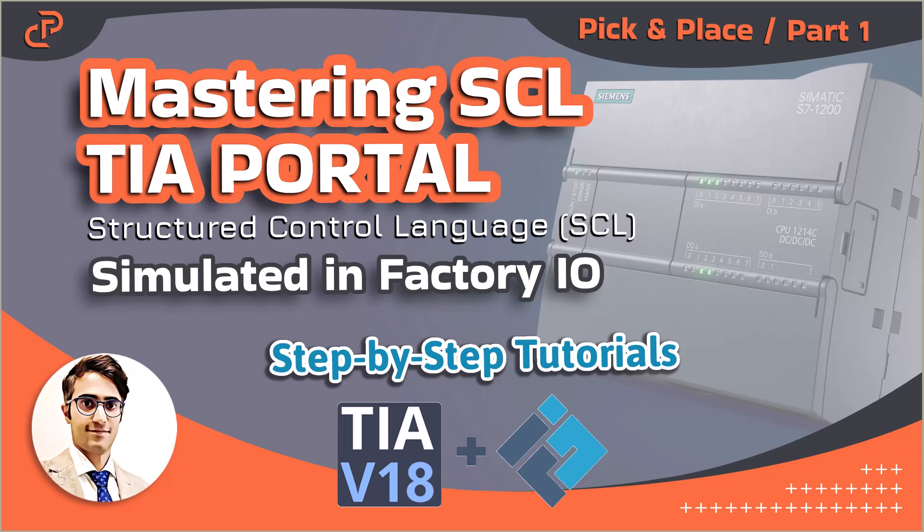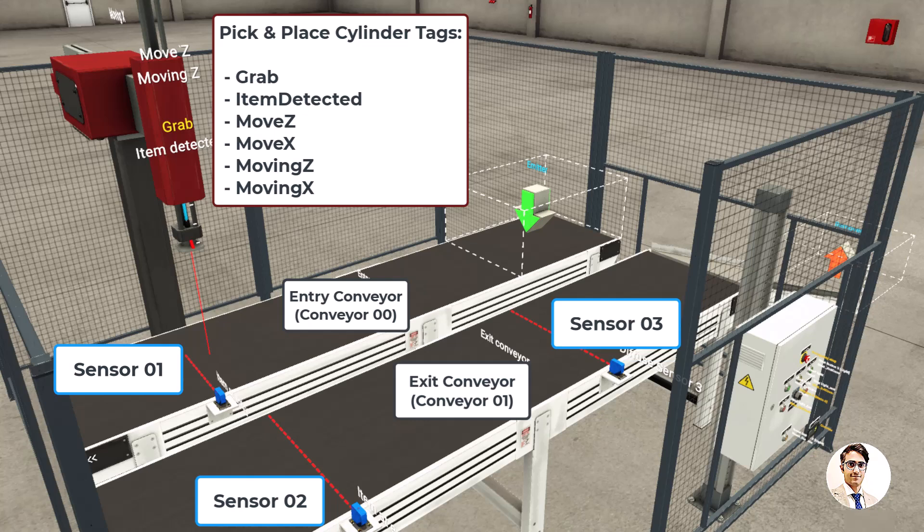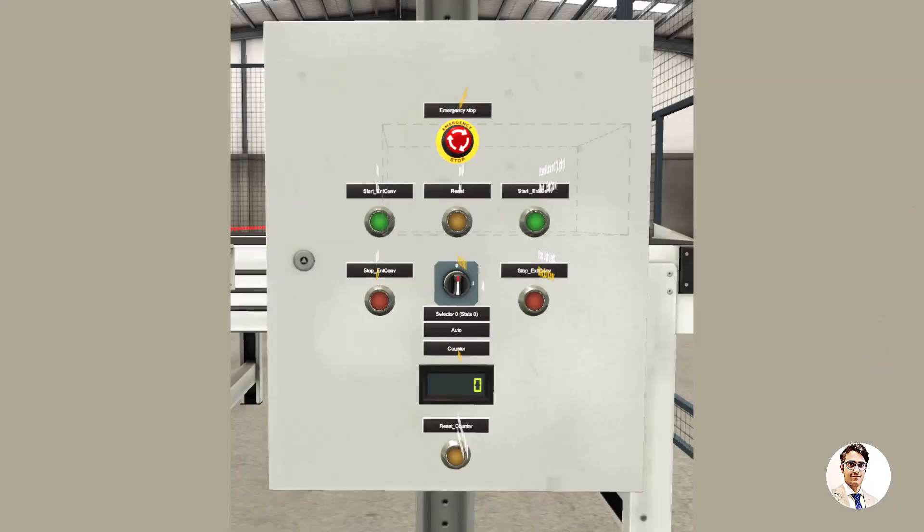Hello guys, in this tutorial you will see SCL programming of a pick and place cylinder in TIA Portal, and finally it is simulated in Factory IO. The line includes two conveyors — the entry conveyor (conveyor zero) and exit conveyor (conveyor one). There are totally three diffuse sensors plus one pick and place cylinder. This is the control panel with start and stop push buttons.